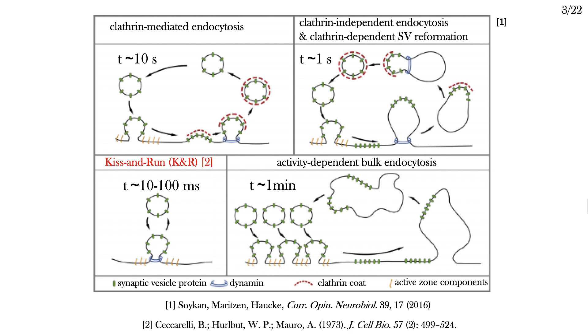The main ones that I want to highlight are clathrin-mediated endocytosis, where the vesicle entirely merges with the cell membrane and must be later reformed, and the kiss-and-run mechanism, where the vesicle transiently fuses with the membrane in order to eject the neurotransmitter and it's then released. The other two mechanisms shown here are variations on this theme.